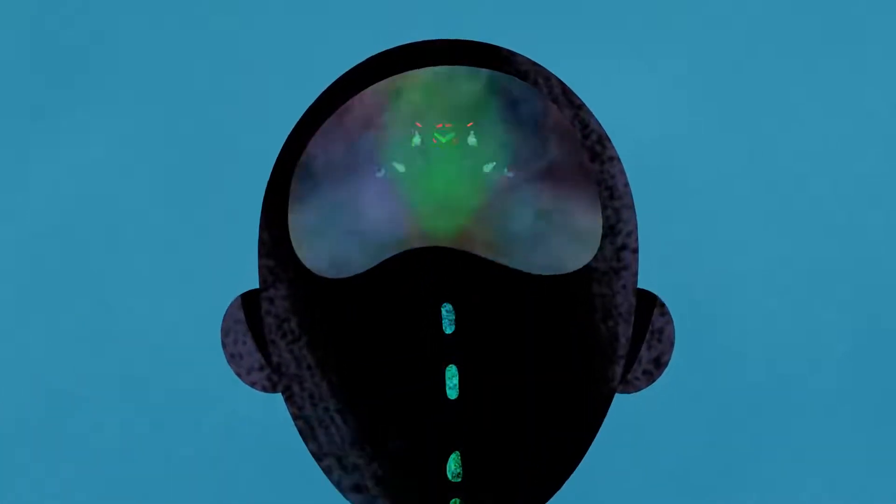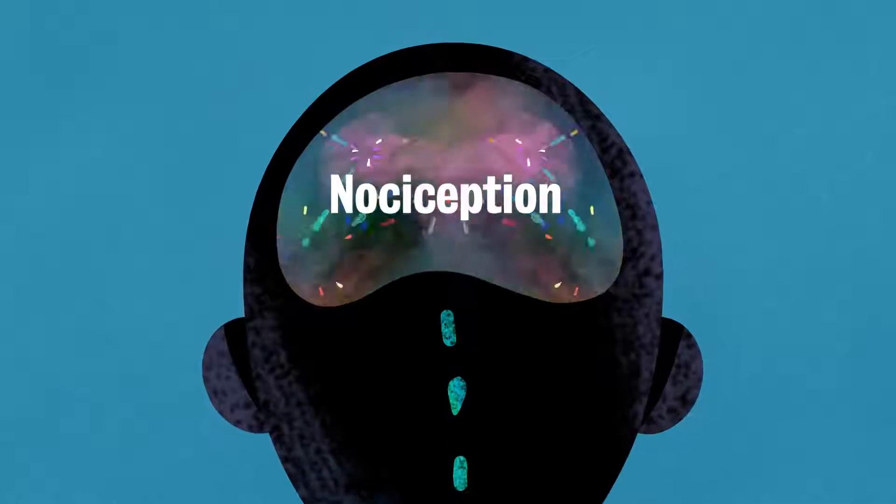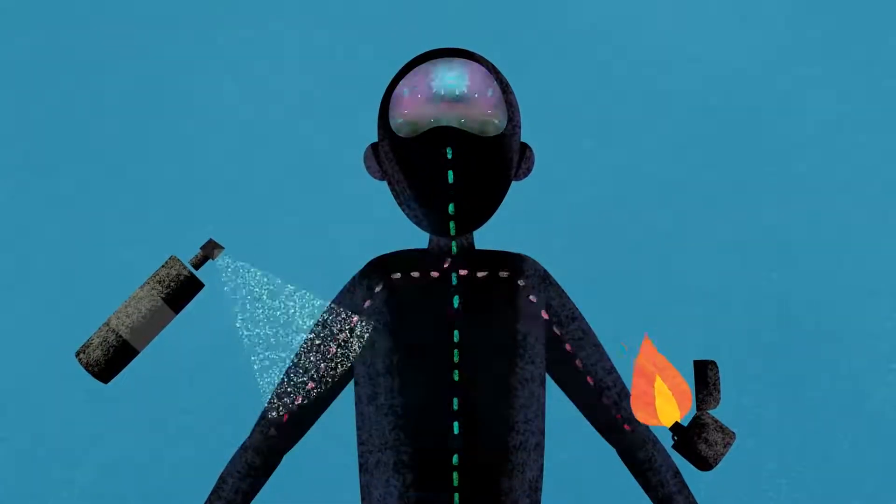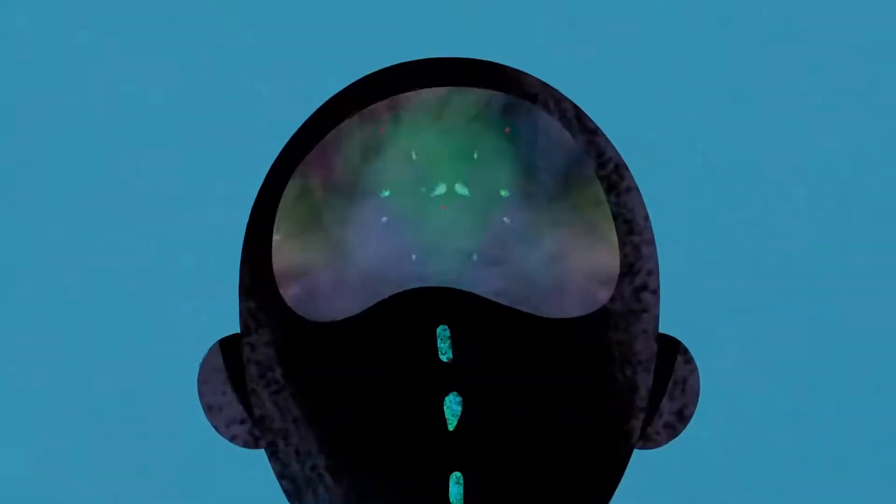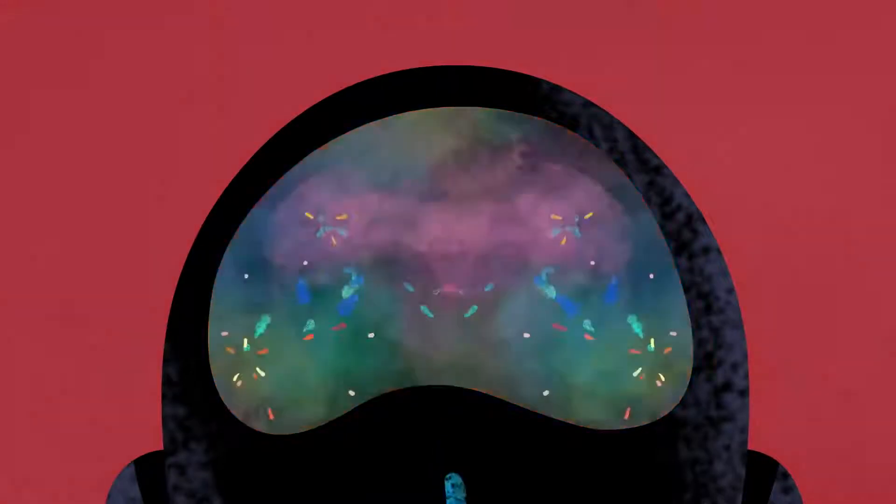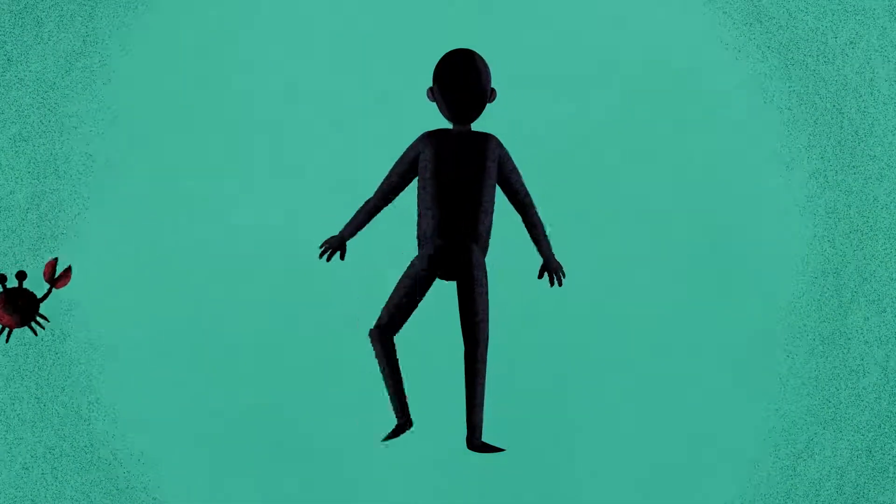This activity in neurons is called nociception, and it's happening all the time. But only sometimes results in pain. Most of the time, the brain protects you with other things, like movement.